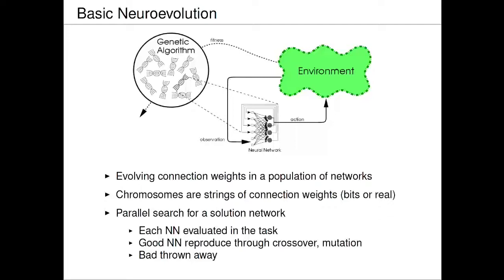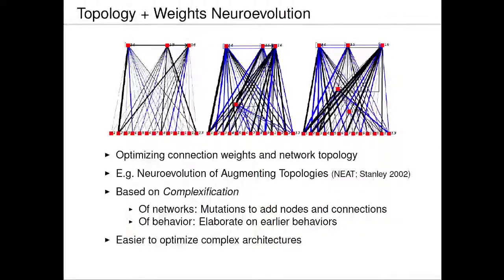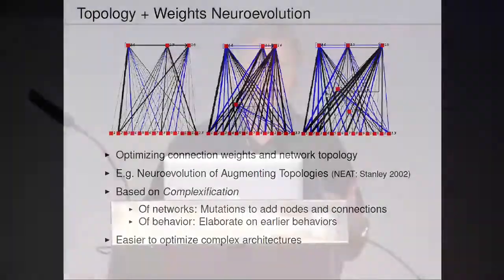That's the basic idea, taking inspiration from biology and evolutionary computation. But you can do more — you can evolve the structure of the network itself. Like in NEAT from Ken Stanley's group, the idea is to complexify: you start with very simple network architectures and gradually make them more complex, adding recurrency and more nodes. When you do that, you build the ability to perform more complex tasks. It also turns out that even with a complex architecture to begin with, it would be very difficult to evolve its weights — you can only find the right weights if you increase complexity gradually.